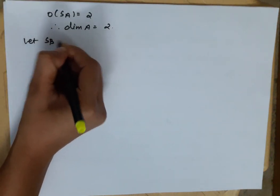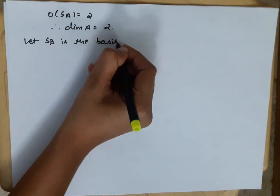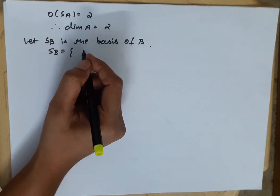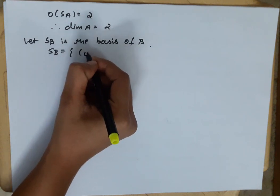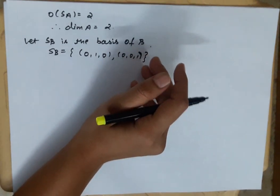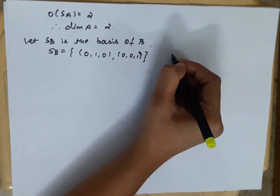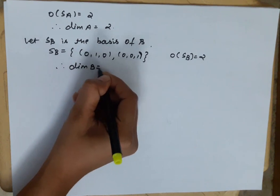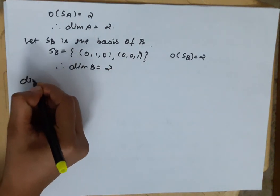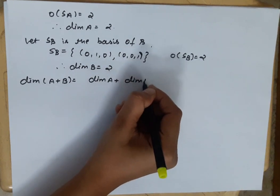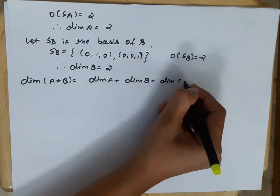Let S_B be the basis of B. For subspace B, the first element is 0 and the other coordinates are free. So the basis S_B consists of (0, 1, 0) and (0, 0, 1). The order of S_B is 2, therefore the dimension of B is 2.